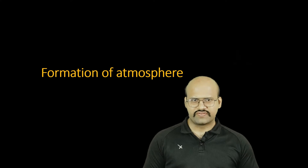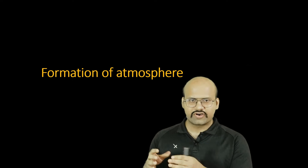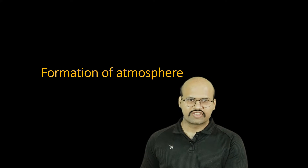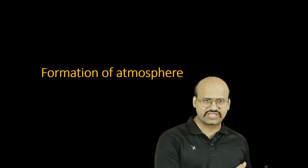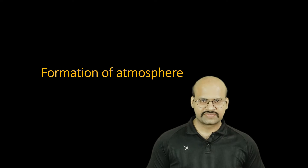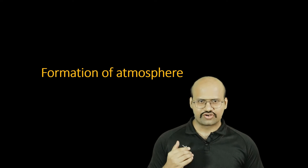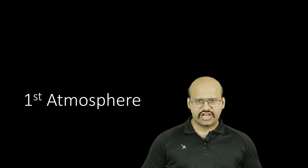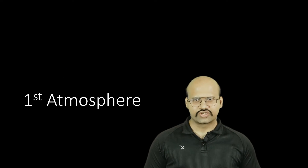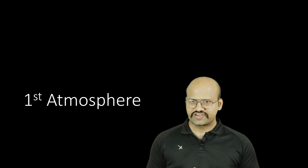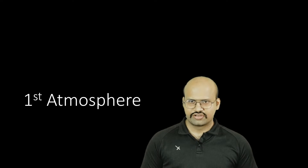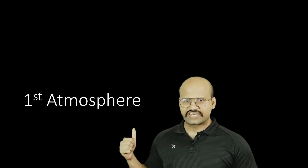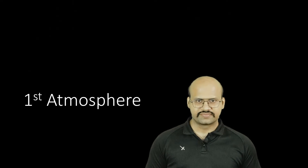So how did we move from an atmosphere of hydrogen and helium to an atmosphere of nitrogen and oxygen? This is what we are going to see today. The atmosphere was formed in different stages, and here we are going to see the first atmosphere that was formed on Earth.